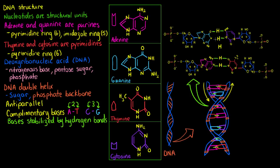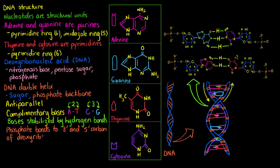So here we have cytosine and guanine joined by three hydrogen bonds at the middle. Our backbone also needs to be stabilized — otherwise the strands would freely rotate around the hydrogen bonds. So the phosphate bonds to the three-prime and five-prime carbons of our deoxyribose, which is why we refer to our strands as having a three-prime and five-prime side. And because the strands are antiparallel, one strand's nucleotide structure is effectively upside down relative to the other.